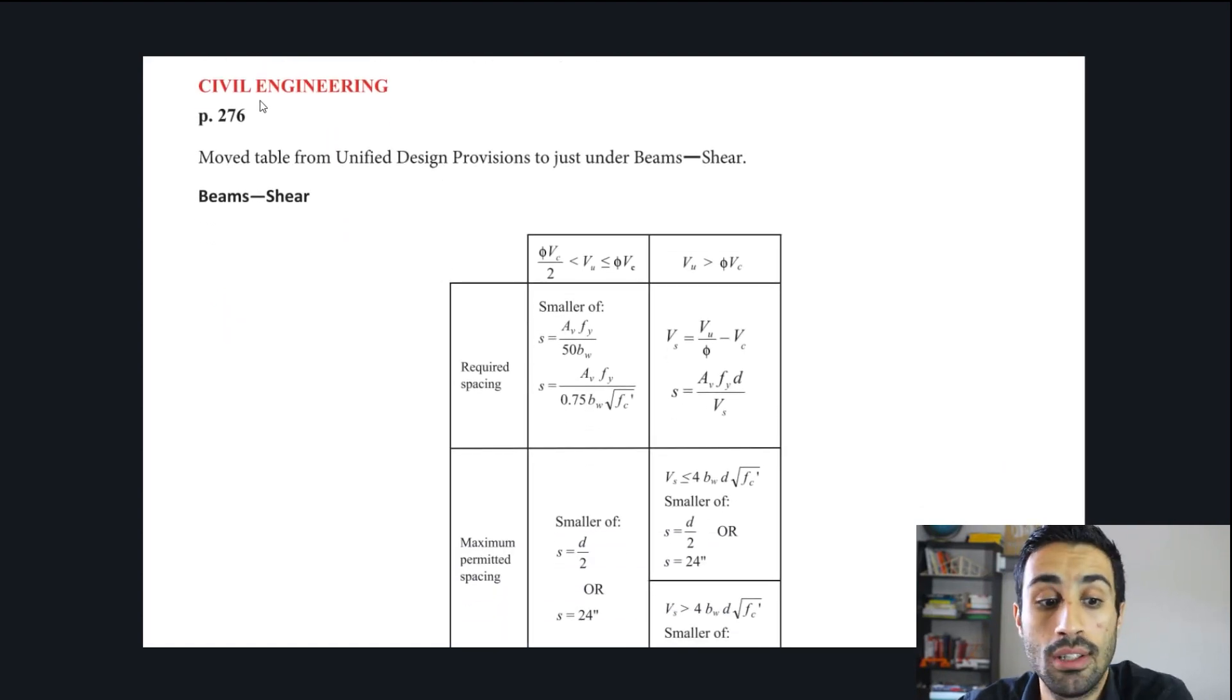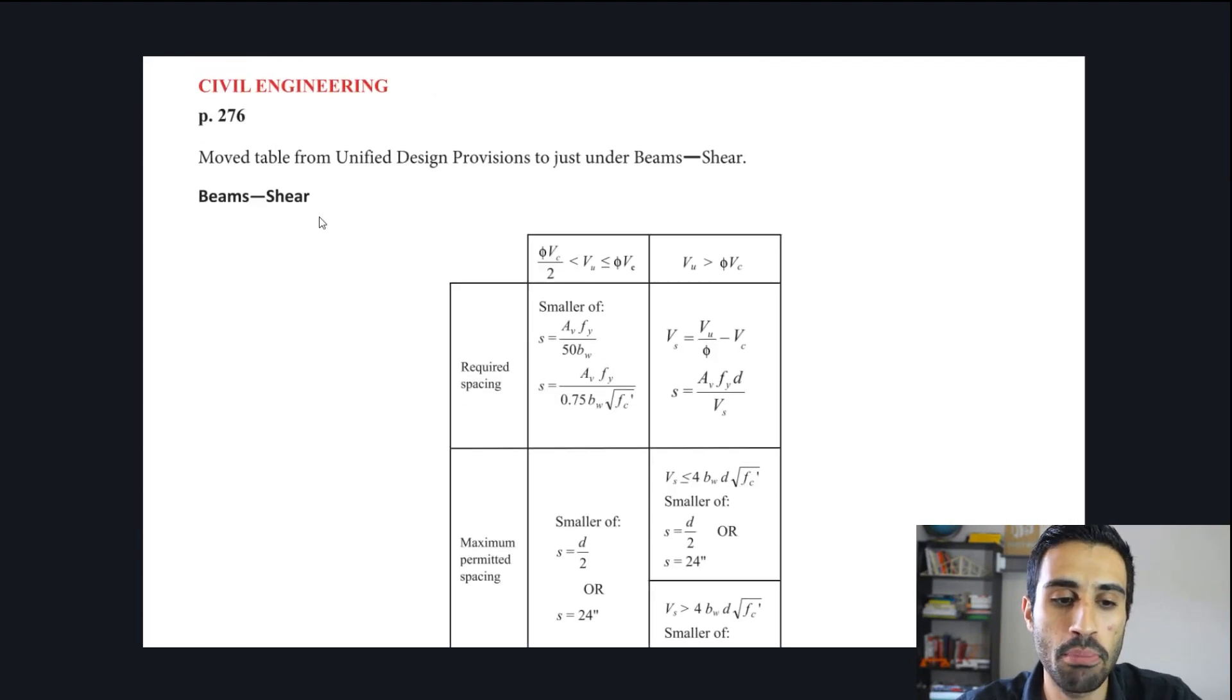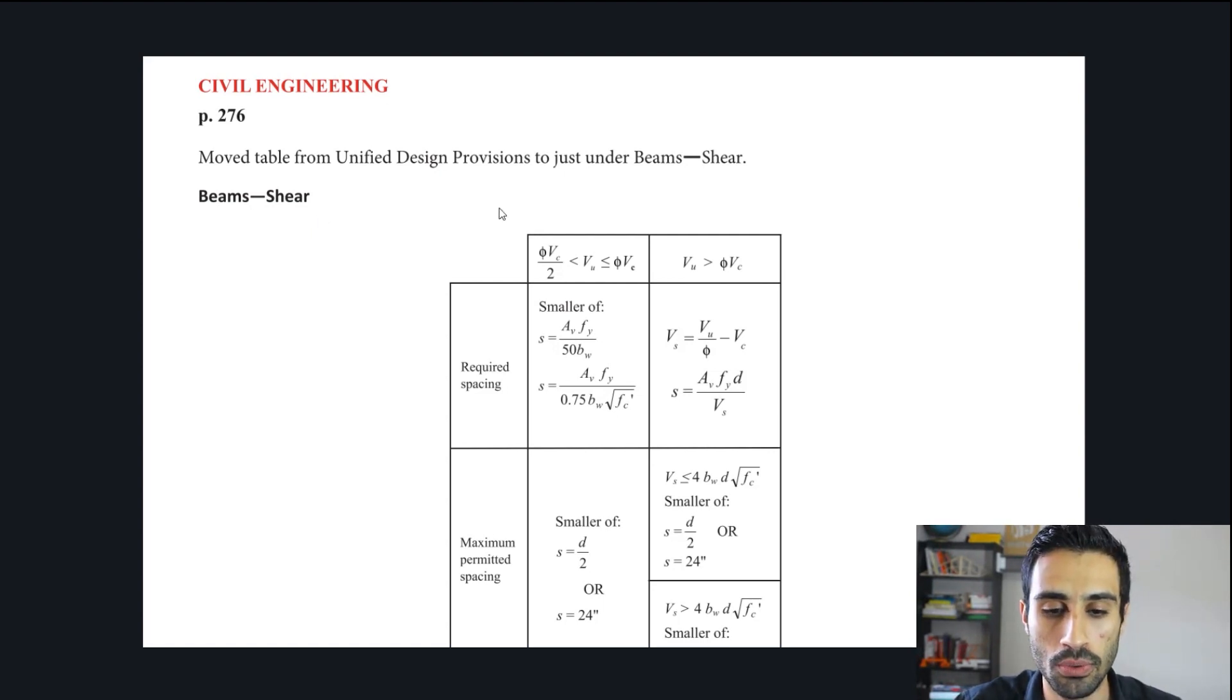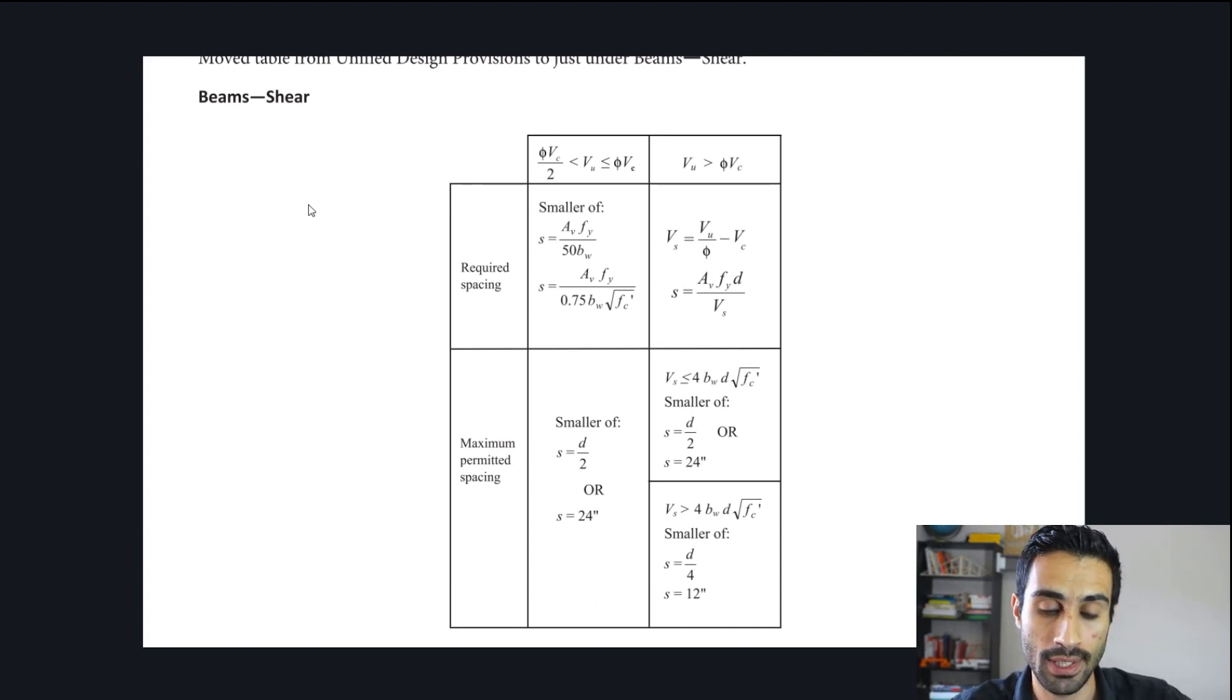Now for civil engineering, this is when stuff is going to be switched around. Make sure you're using this latest handbook. The first thing is, which I liked that they did this, is move this table for shear. When we're determining the spacing of the stirrups and also looking at the maximum permitted spacing and the required spacing, they put that on their shear. It makes sense. Before it was confusing, we had to scroll too much or click too many pages just to get this. I like that they did this. It'll save us time on the actual FE as we're doing practice questions and on the actual exam. They moved this table directly under beam shear in the latest FE handbook.